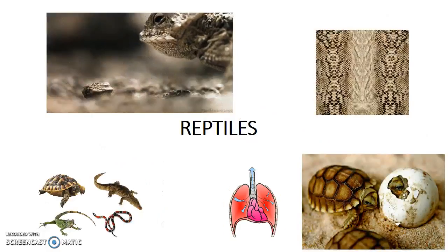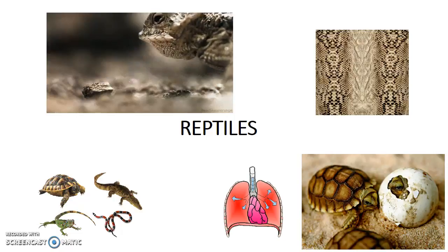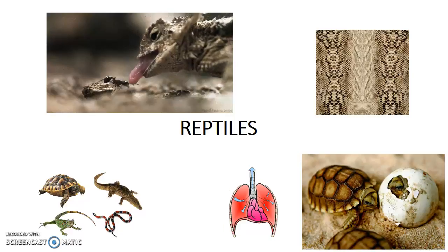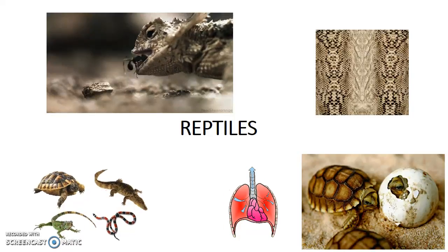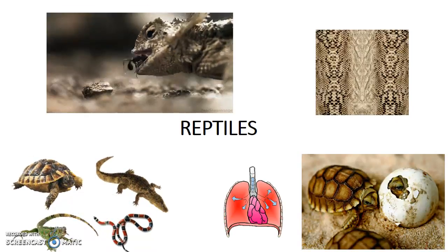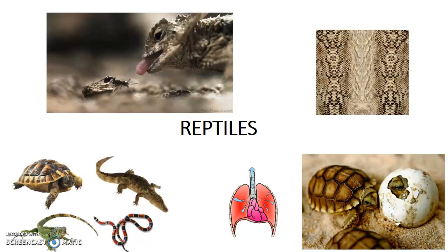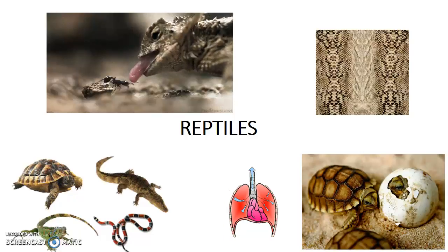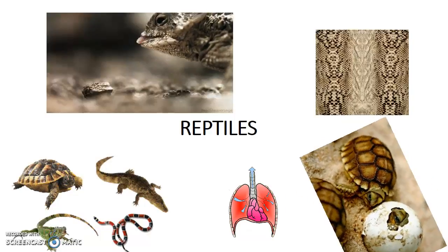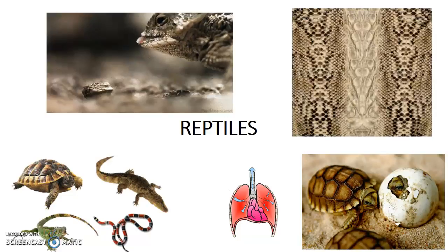Third, reptiles. They are characterized by their special way of moving, that is, by dragging their abdomen close to the ground. Many are terrestrial, but some of them live in water. They have specific characteristics: they are cold-blooded animals that breathe with their lungs. They are oviparous, like birds.